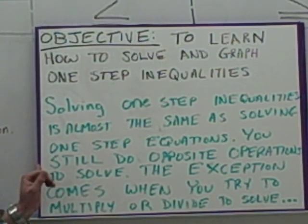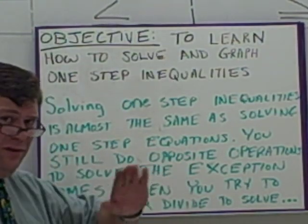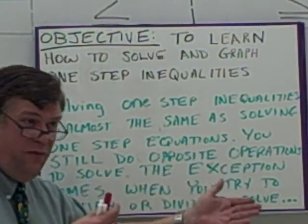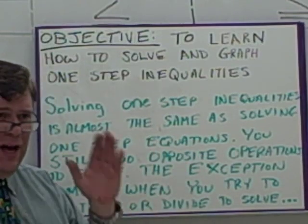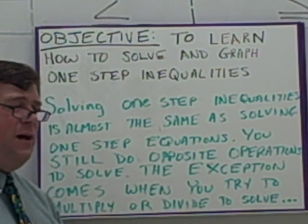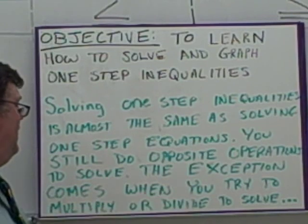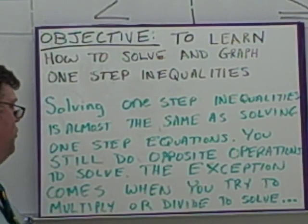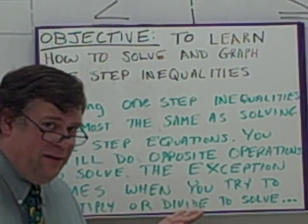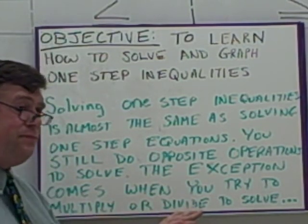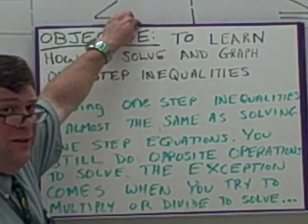However, you are still going to be doing opposite operations. If it was being added, you're going to subtract. If it was being multiplied, you divide. Opposite operations still hold true here. However, the exception comes when you try and multiply or divide to solve. We're going to see that when we get to that a little later here.